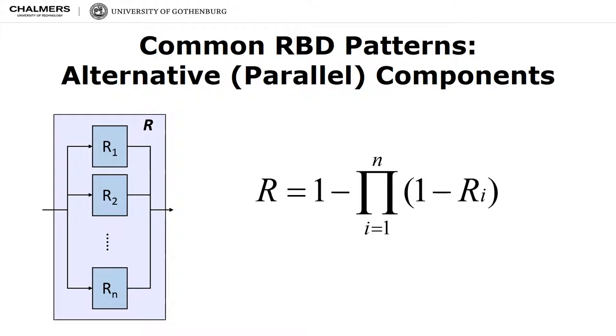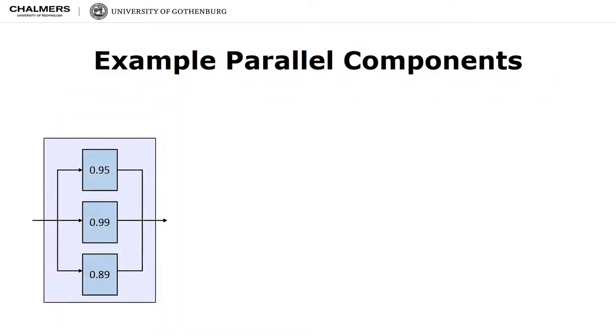Here is the other common pattern in reliability block diagrams. This denotes alternative or parallel components. In this case, the overall reliability of a system is 1 minus the probability of all components failing. Essentially, it indicates alternatives: at least one of the components must offer a service for a computation to pass through the system. Here is an example. Please look at the calculation carefully.